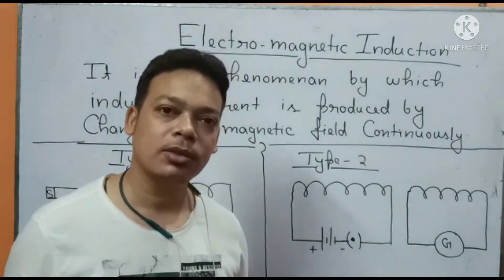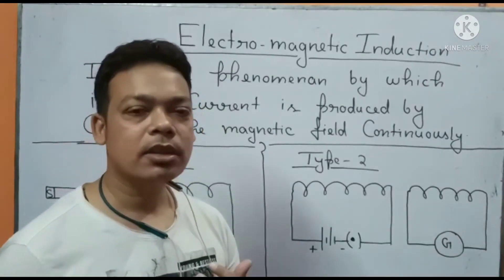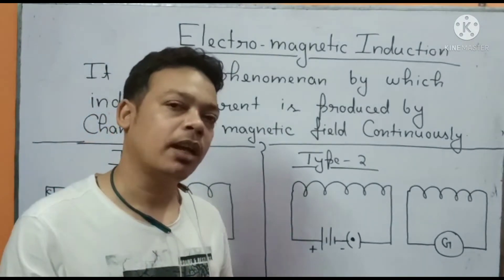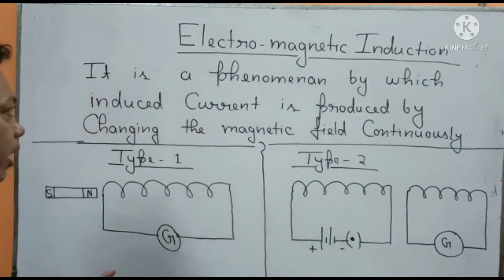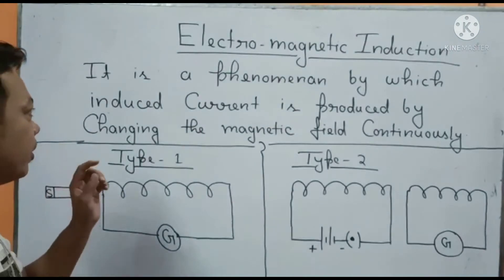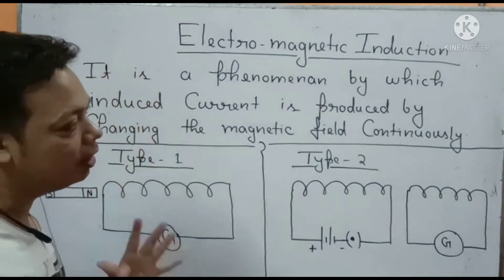Electromagnetic induction basically kya hota hai? It is a phenomenon by which induced current is produced by changing the magnetic field continuously.